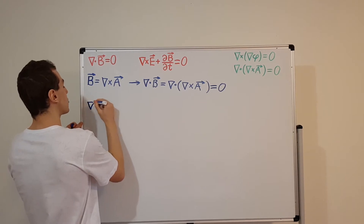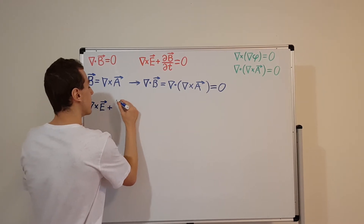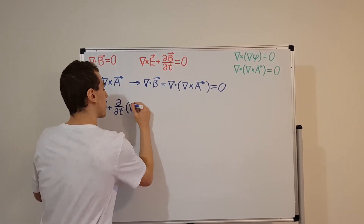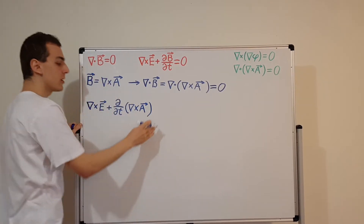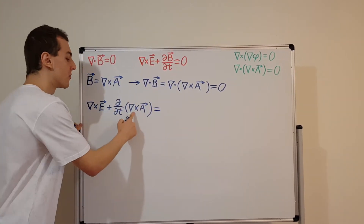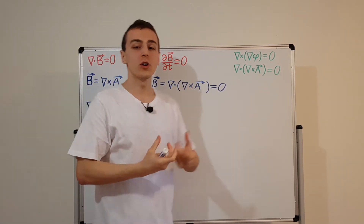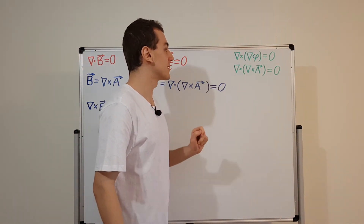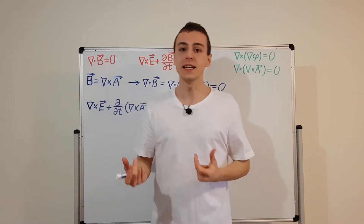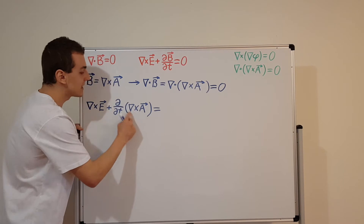Substituting B = curl(A) into Faraday's law gives: the curl of E plus the time derivative of curl(A) equals zero. We can swap the order of the curl and the partial time derivative — just as we swapped spatial partial derivatives before, we're allowed to swap a time derivative with spatial derivatives. The curl contains spatial derivatives, and we have a separate time derivative, and swapping them is valid for well-behaved functions.